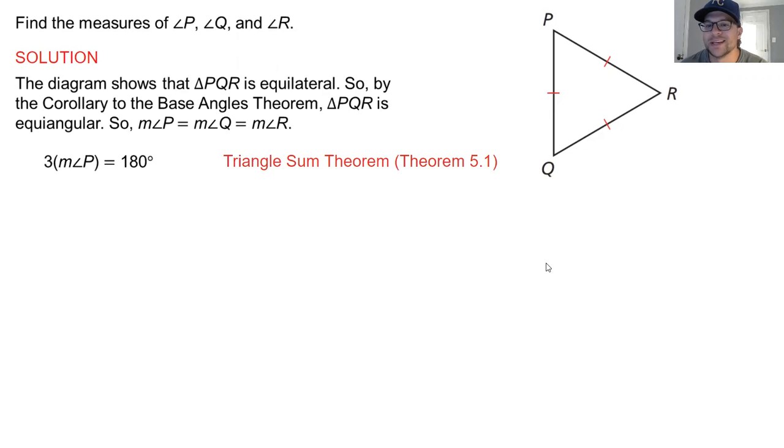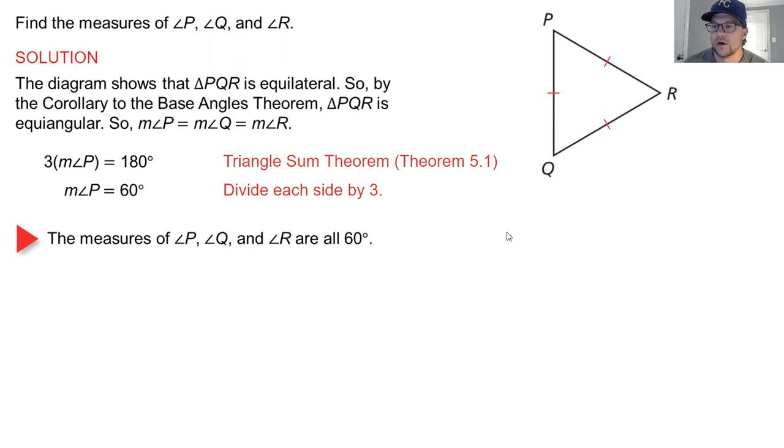So you could just say that three times any one of the angles since they're the same has to equal 180. Divide that by three and you get 60 for angle P. Q is also 60. R is also 60. So every equilateral triangle has to have the same angle measure and they're all going to be 60 degrees.